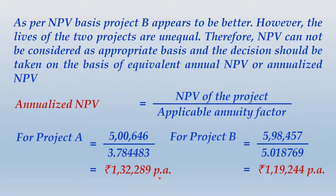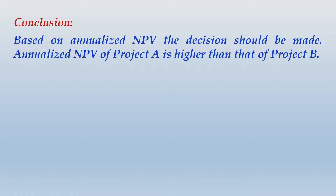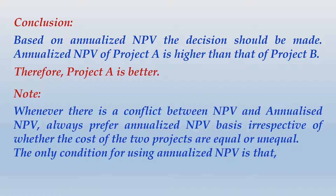When computing annualized NPV, the final value must be expressed as a per annum figure. A per annum value multiplied by the annuity factor gives a present value, so present value divided by the annuity factor gives you the per annum value. On a per annum basis we can compare and conclude that project A is better. Based on annualized NPV, the annualized NPV of project A is higher than that of project B, therefore project A is better.